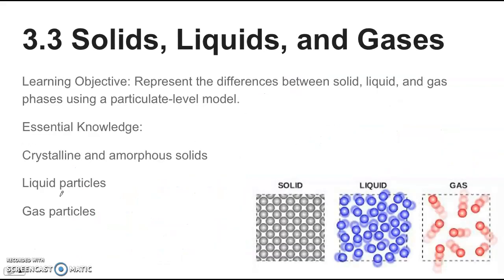Section 3.3 is on solids, liquids, and gases. The learning objective is to represent the differences between solid, liquid, and gas phases using a particulate level model. You want a general understanding of what's going on at the particle level for these different substances. With solids, there's crystalline and amorphous solids. Crystalline solids have an ordered arrangement of particles. In amorphous solids, it's a random arrangement of particles, and they tend to be softer than crystalline solids.